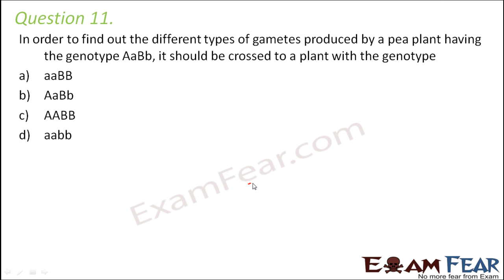Question number 11. In order to find out the different types of gametes produced by a plant having the genotype capital A, small a, capital B, small b, it should be crossed with a plant with the genotype...